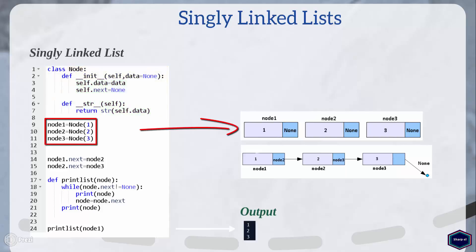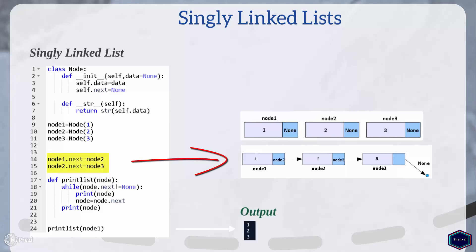Now in main I have created three different instances of node class, but I haven't created any linked list yet because all these three node objects are not linked together. The simplest way to create a singly linked list is to connect all these nodes manually, such that the first node's next attribute refers to the second node, the second node's next attribute refers to the third node, and the third node's next attribute refers to none. I have also created a function print_list which takes the first node as an argument and prints the data attribute of all the nodes in the list.